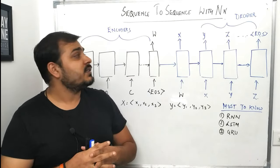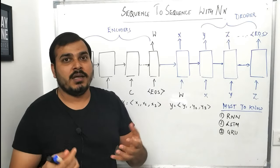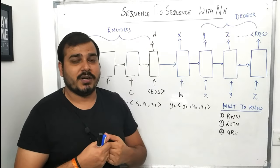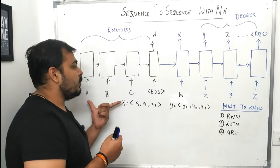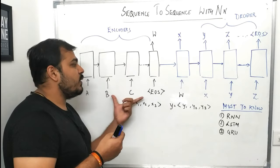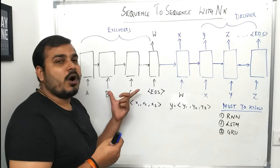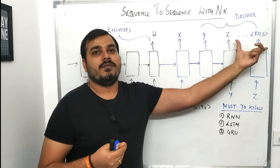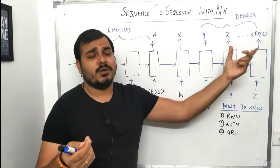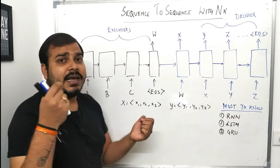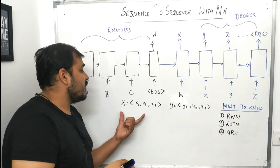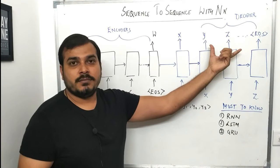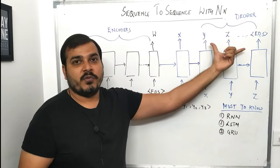Let's understand how encoders and decoders actually work. In sequence to sequence, suppose my model takes a sequence of information and outputs a sequence of information — that may be a different kind of example altogether. One example I'd like to mention is language translation: suppose I want to convert English to French — that can be a sequence to sequence learning.